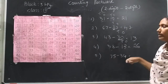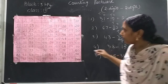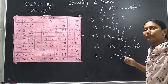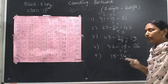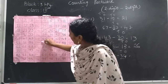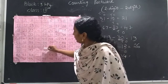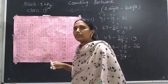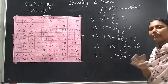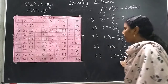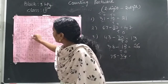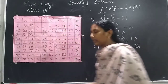Now for 75 minus 34. Where is the number 75? Yes, here is 75. 1's and 10's place. In the 10's place I have 3, so how many steps do I move upward? 3 steps. From 75: 1, 2, 3 — I reach 45. From 45, how many steps backward? 4 steps, because in the 1's place I have 4. From 45 move backward: 1, 2, 3 and 4. I reach the number 41.